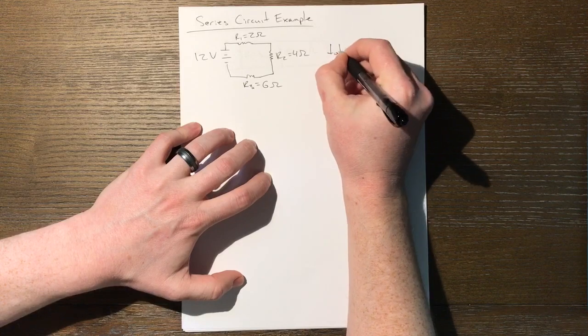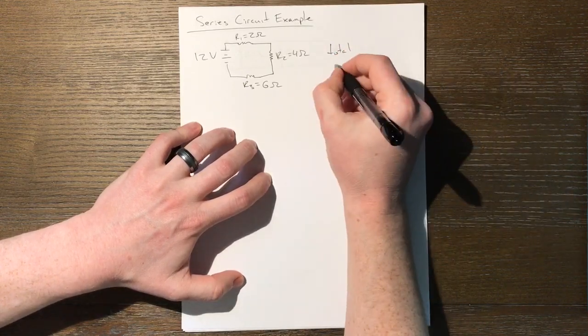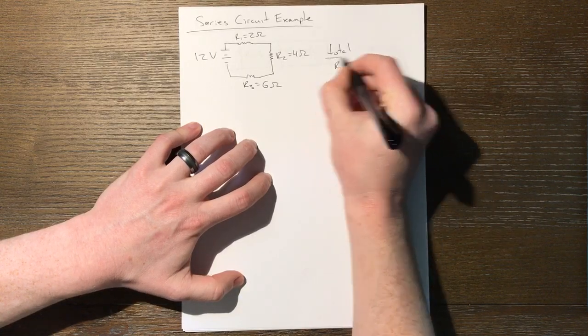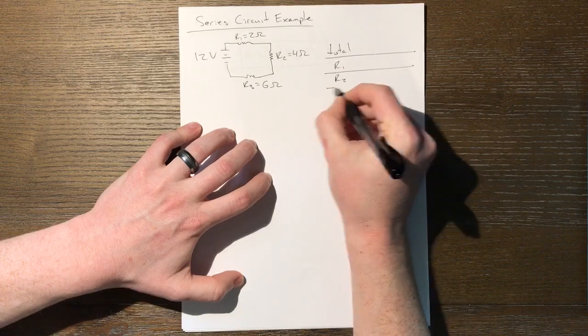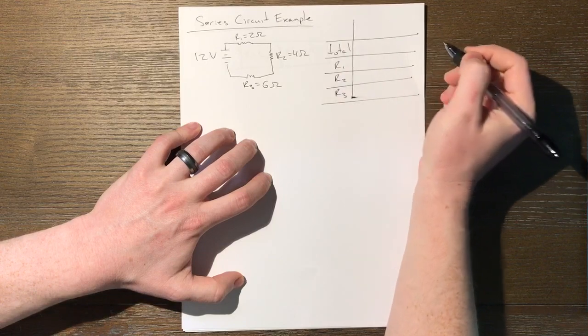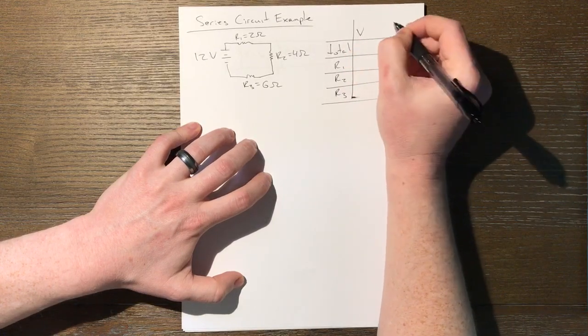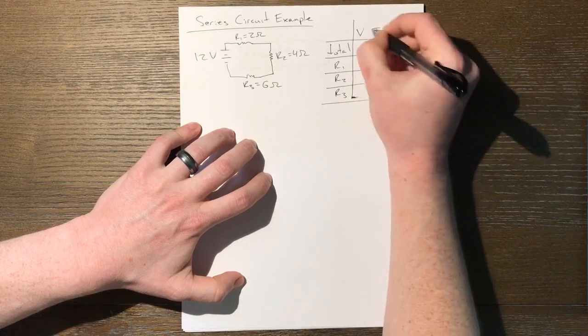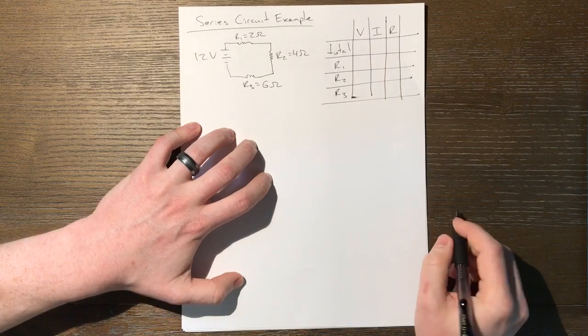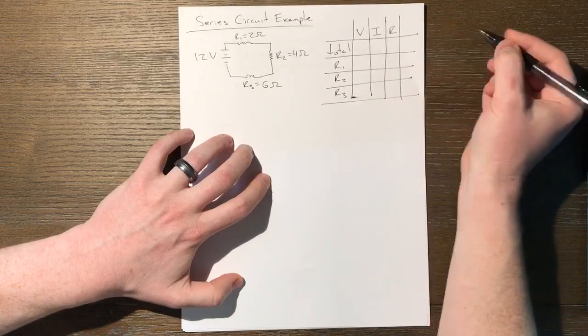So we're going to make rows for the total circuit and each resistor R1, R2, and R3. So those are our rows. And what are we going to solve for each of these things? We need to solve for voltage, current, and resistance. So we have V, I, and R for the entire circuit and for each component, the three resistors.